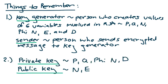The second thing to remember is the difference between the private and the public key. The private key is comprised of the values of P, Q, Phi N, and D, and only the key generator can access these values. The public key is comprised of the values of N and E, and everybody can access the public key.